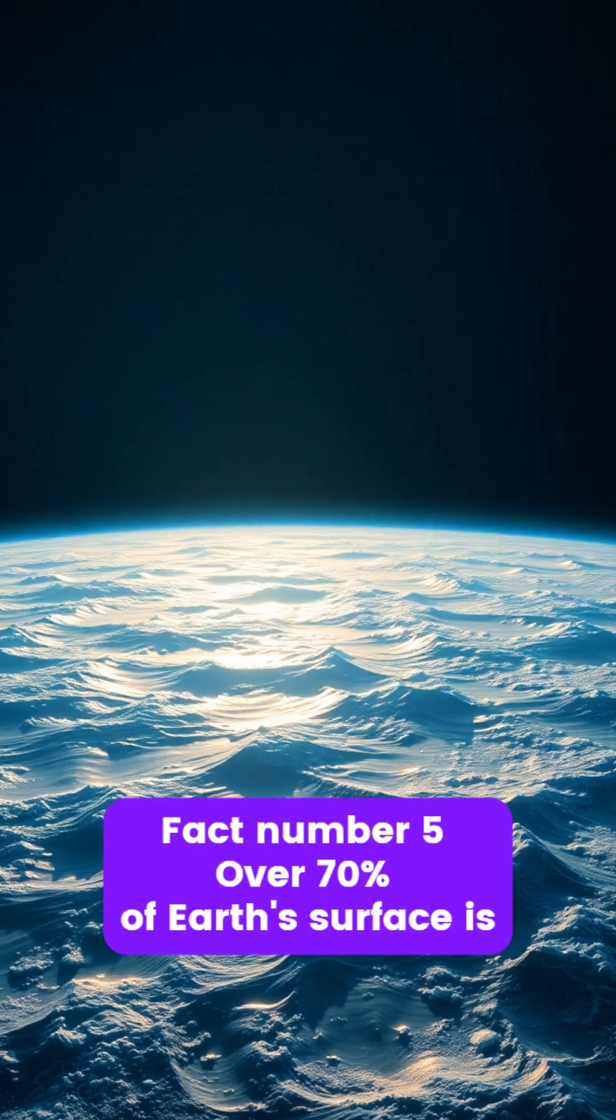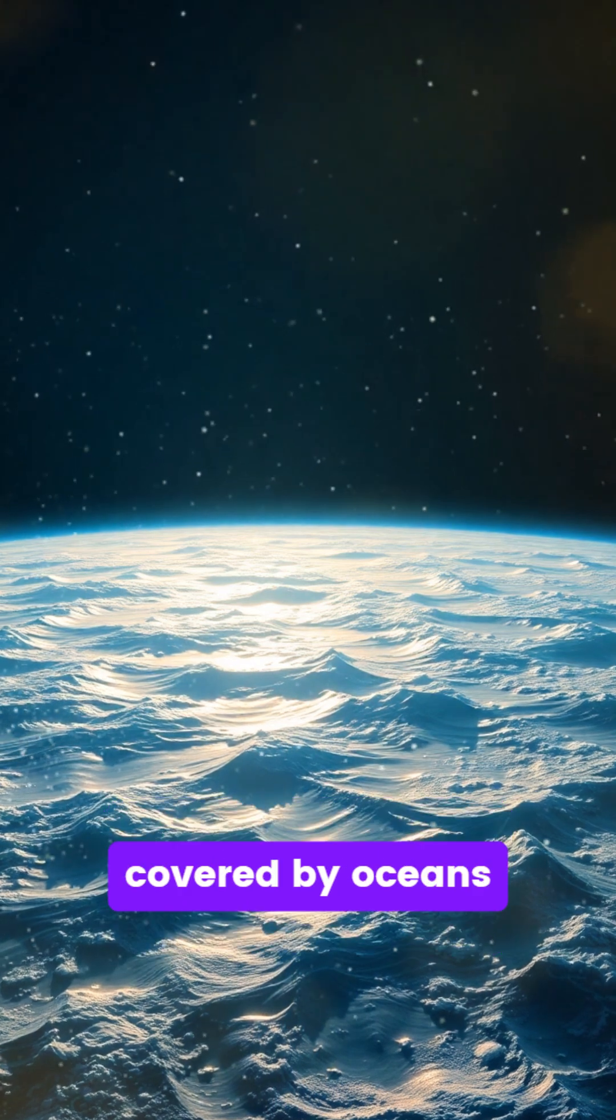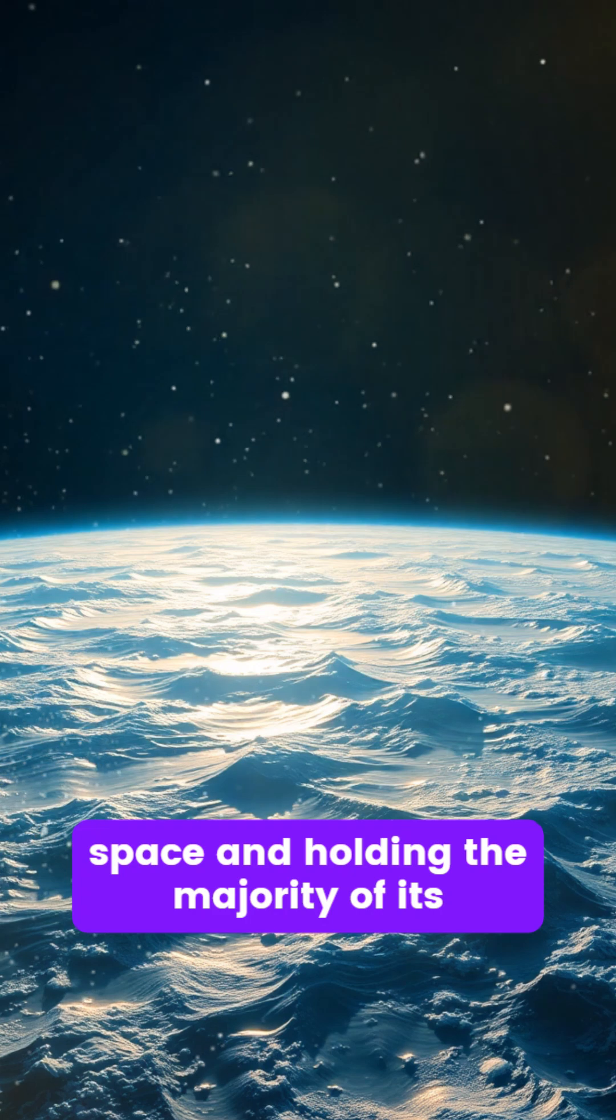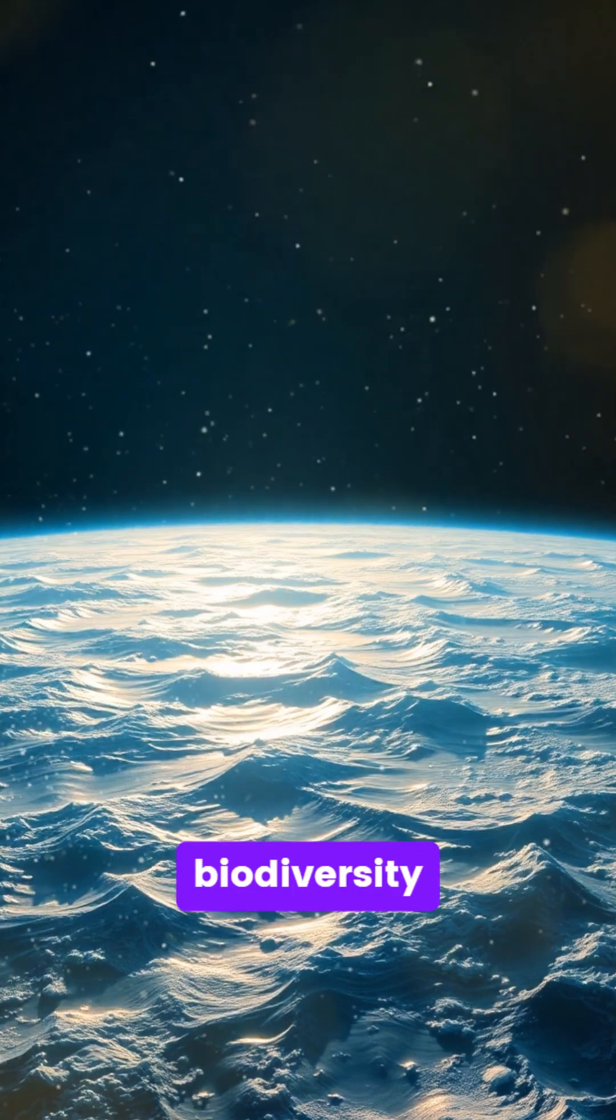Fact number 5. Over 70% of Earth's surface is covered by oceans, making our planet appear deep blue from space and holding the majority of its biodiversity.